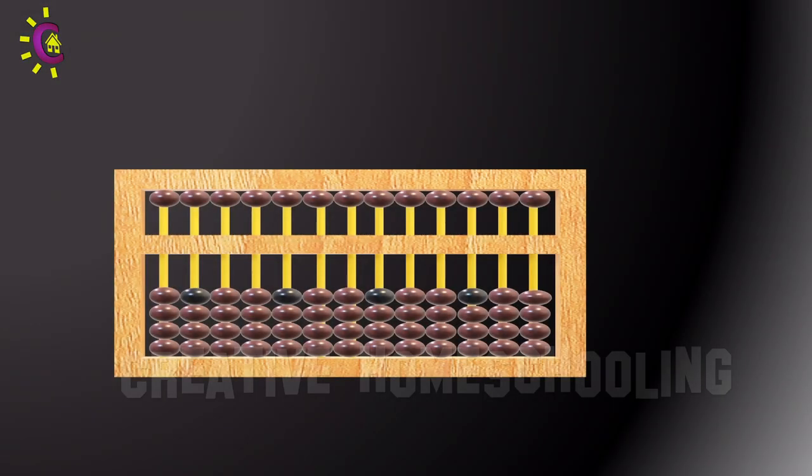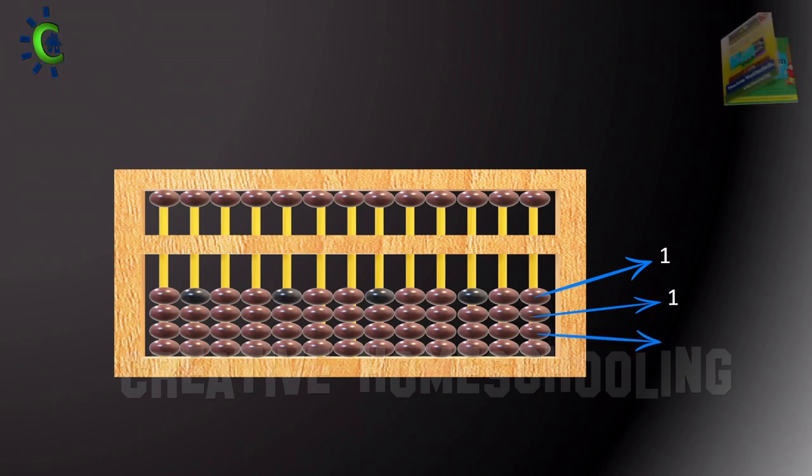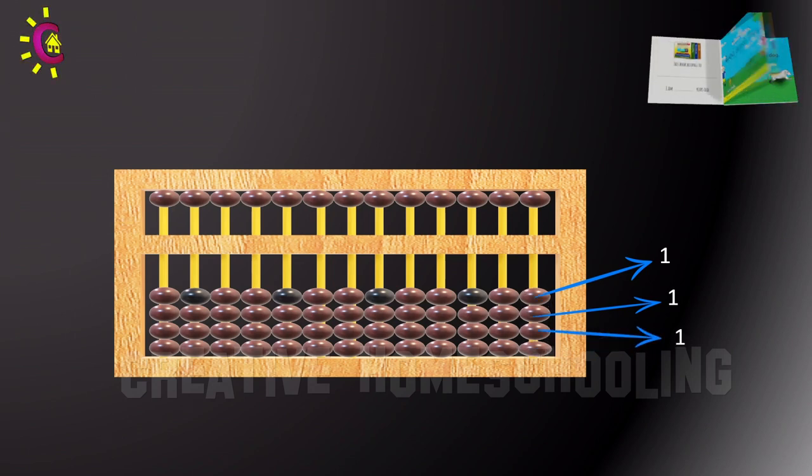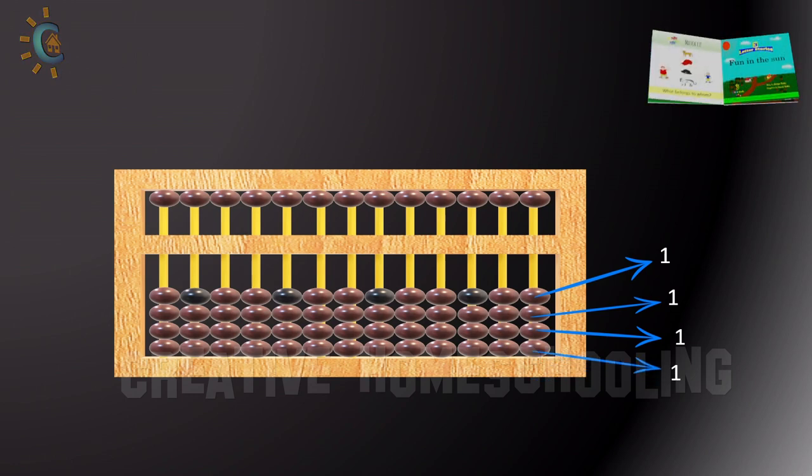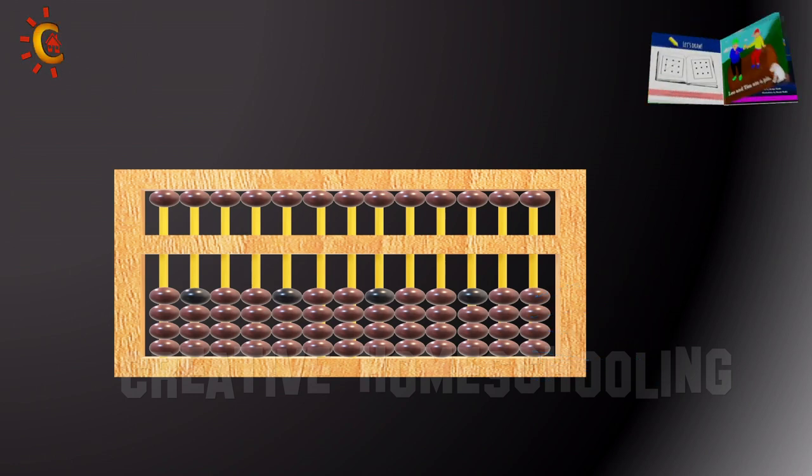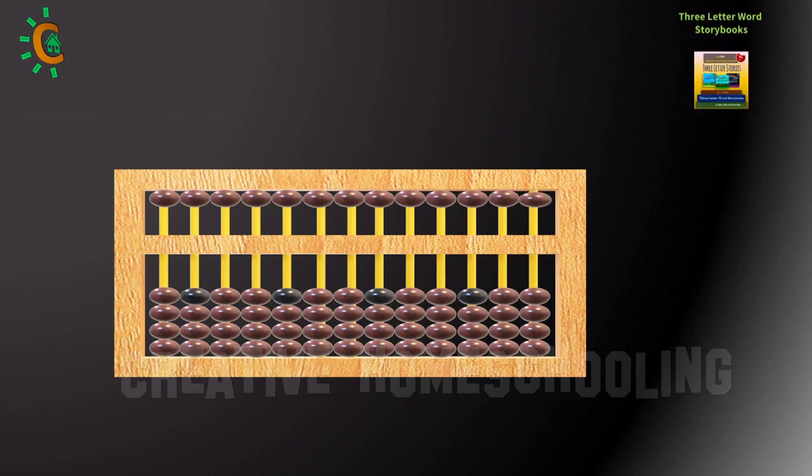Each of the four beads on the lower part of a rod has the value of 1, while the bead on the upper section of a rod has the value of 5.